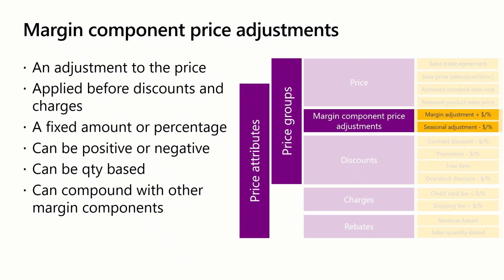Margin component price adjustments allow for adjustments to the price at the time of order before discounts or charges are applied. Adjustments can be a set amount or a percentage and can be positive or negative. Adjustments can be driven based on order quantity and can compound with other price adjustments within the same price component code and across price component codes. For example, as a distributor to be profitable, I determine that I need to mark up the inventory cost of speakers by 30%. For televisions, a 35% markup is required. Margin component price adjustments might be where you apply a tiered pricing strategy based on an amount or percentage across all items or categories of items, rather than maintaining different individual prices for each item across each customer tier.